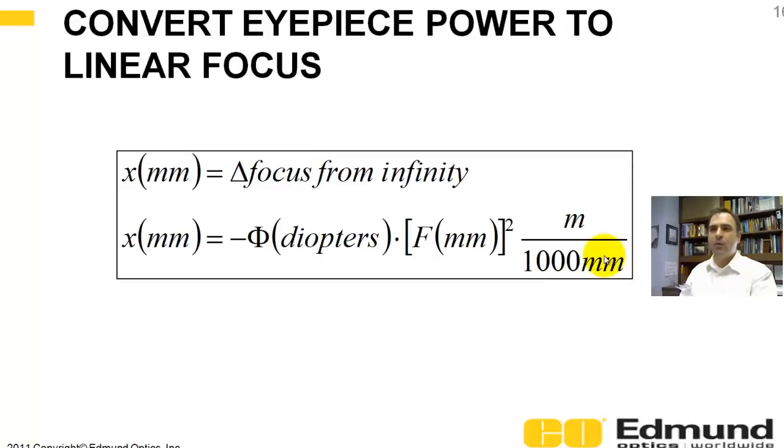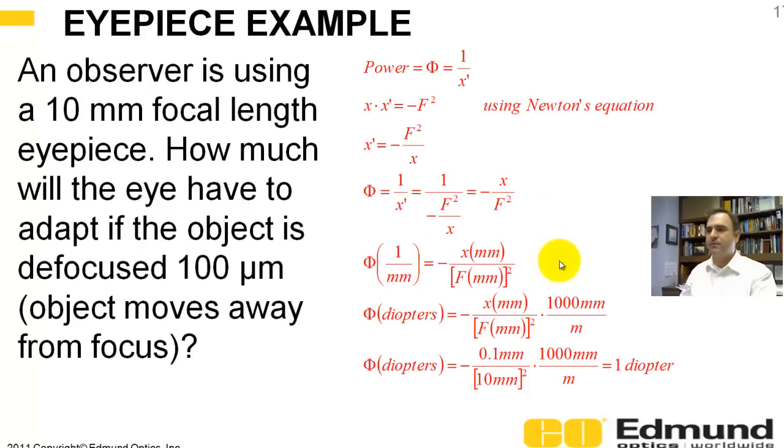Converting eyepiece power to a linear focus, so this delta focus from infinity, we just manipulate, algebraically manipulate that previous equation. Your defocus is negative your power in diopters, times your focal length, divided by 1,000, assuming you're in millimeters and you want to go to diopters.